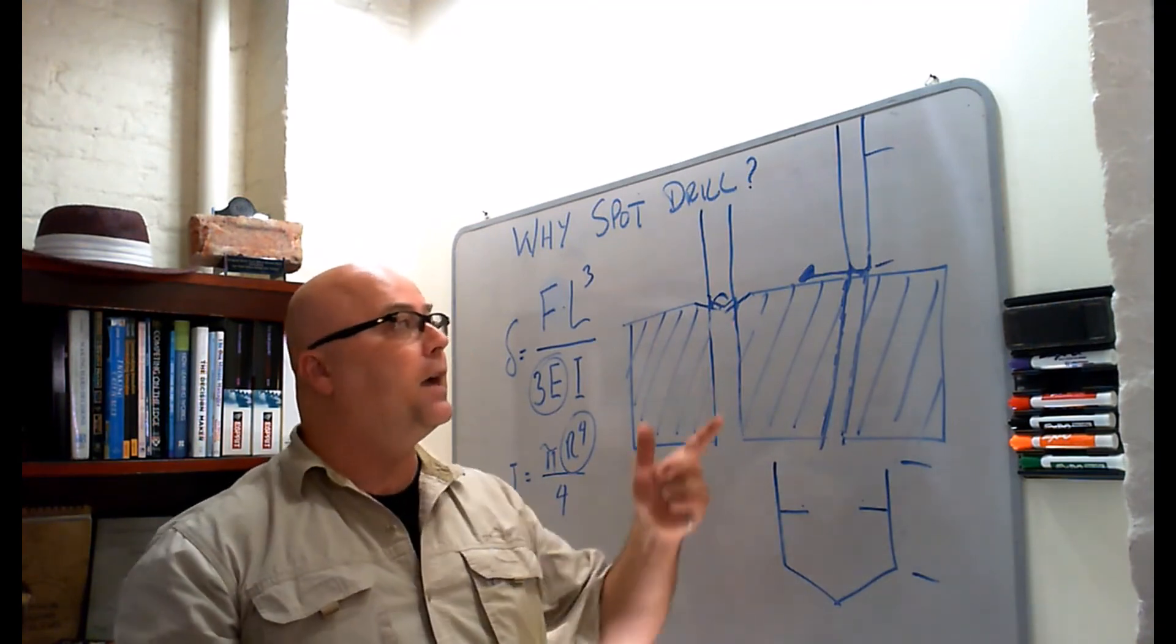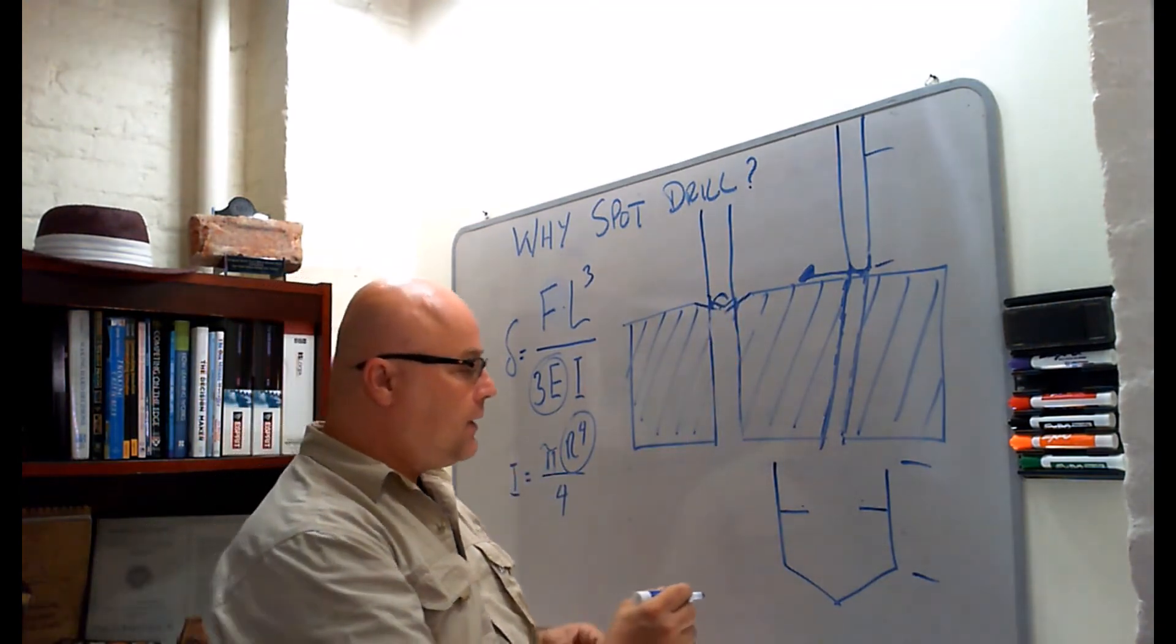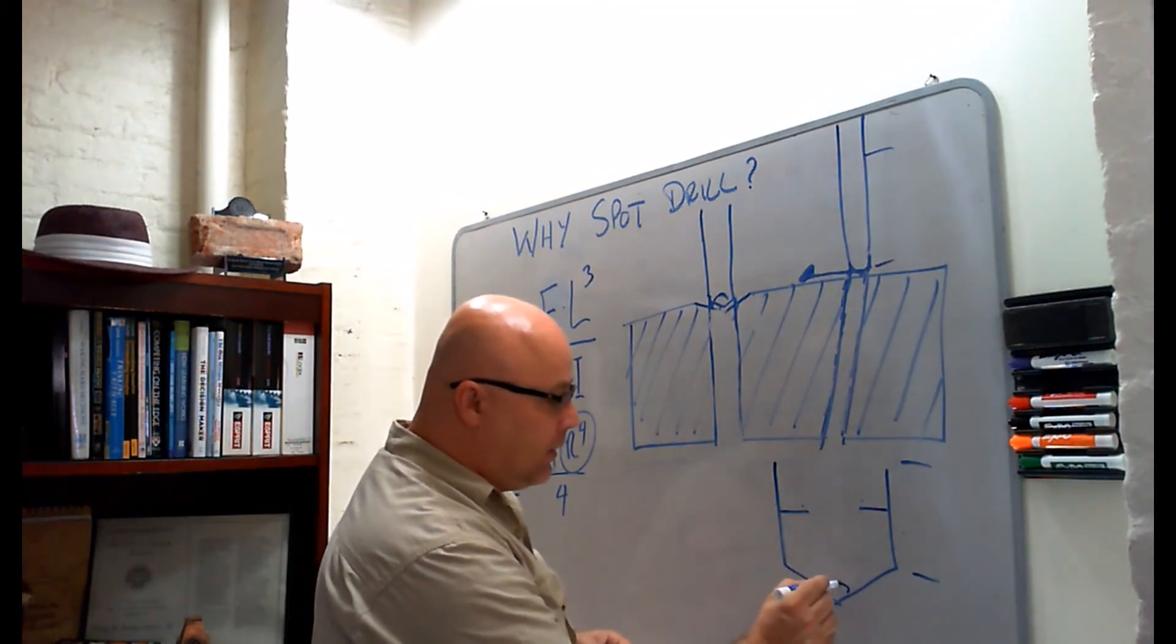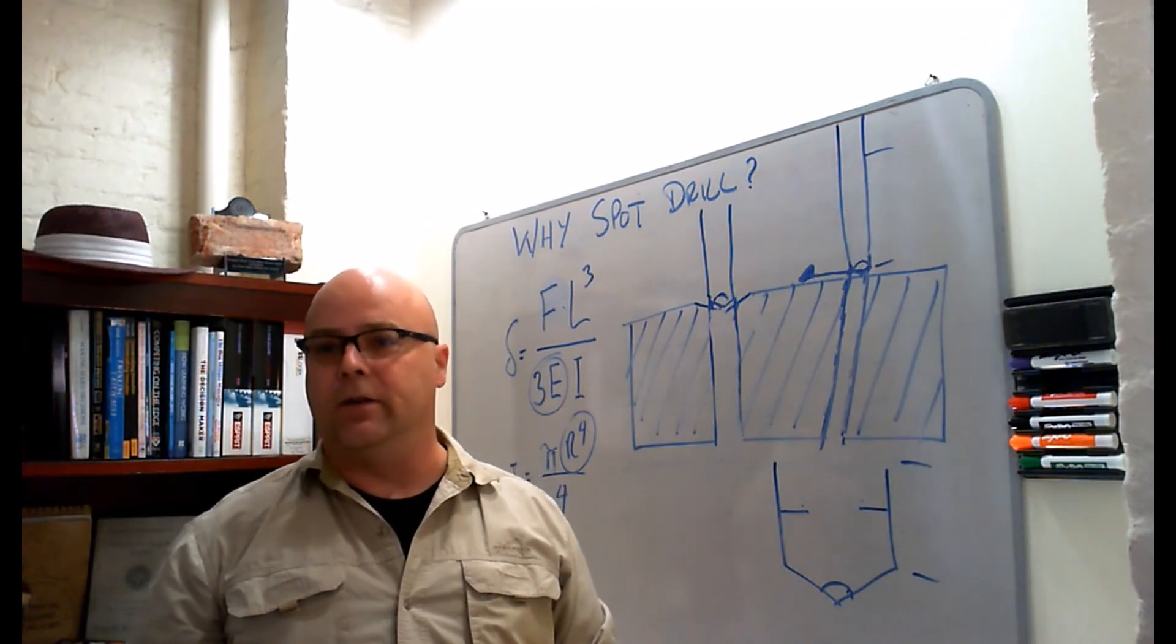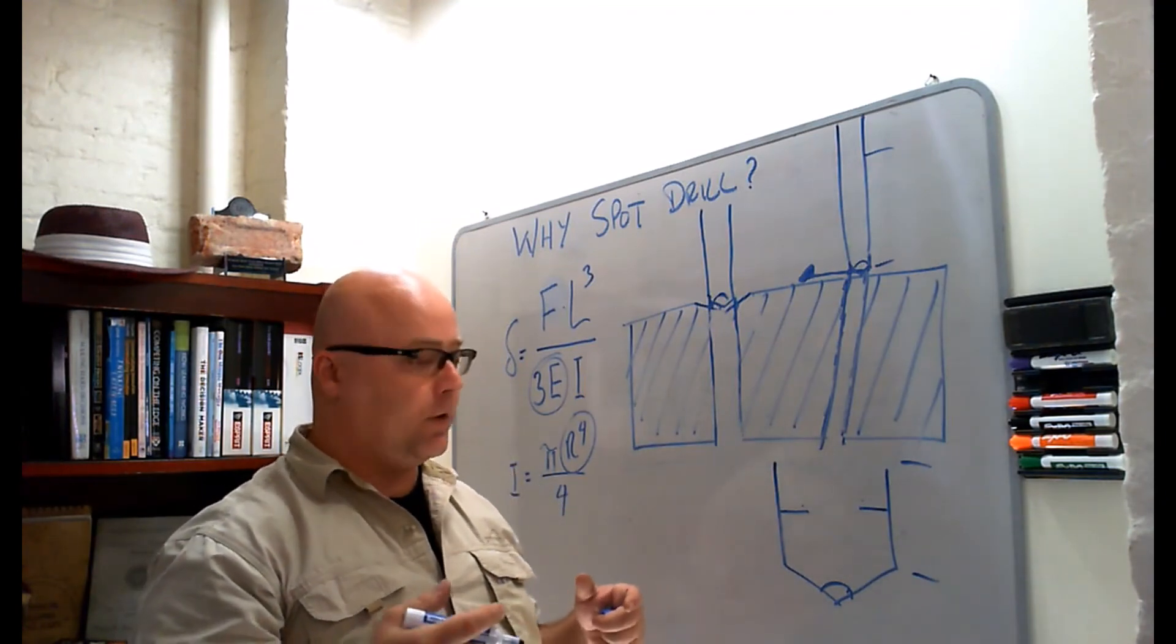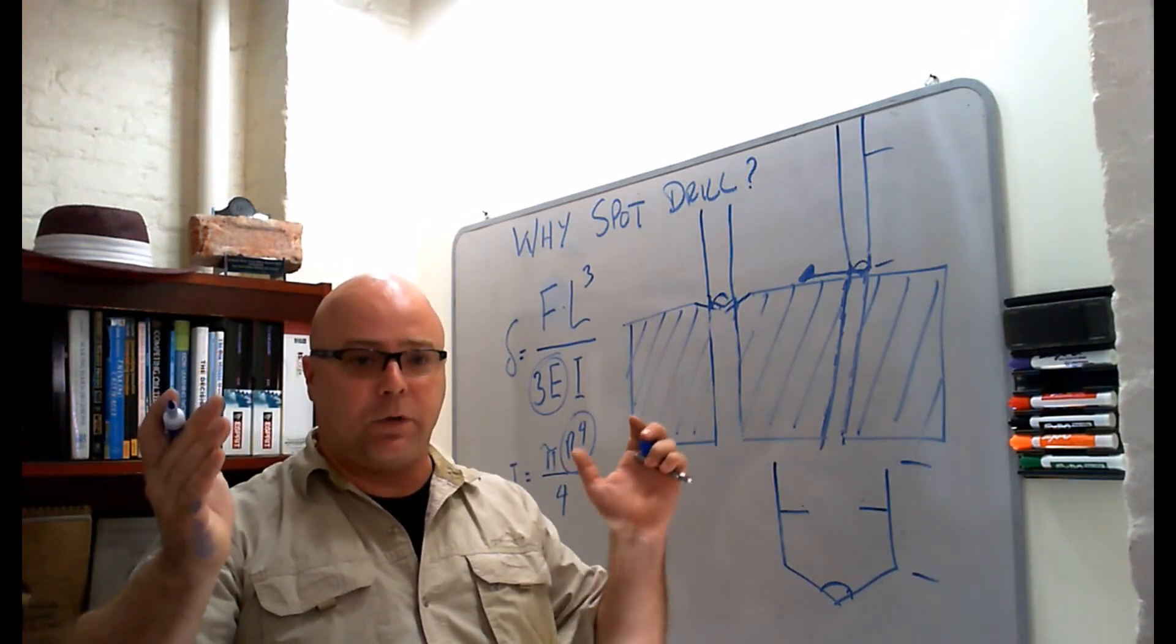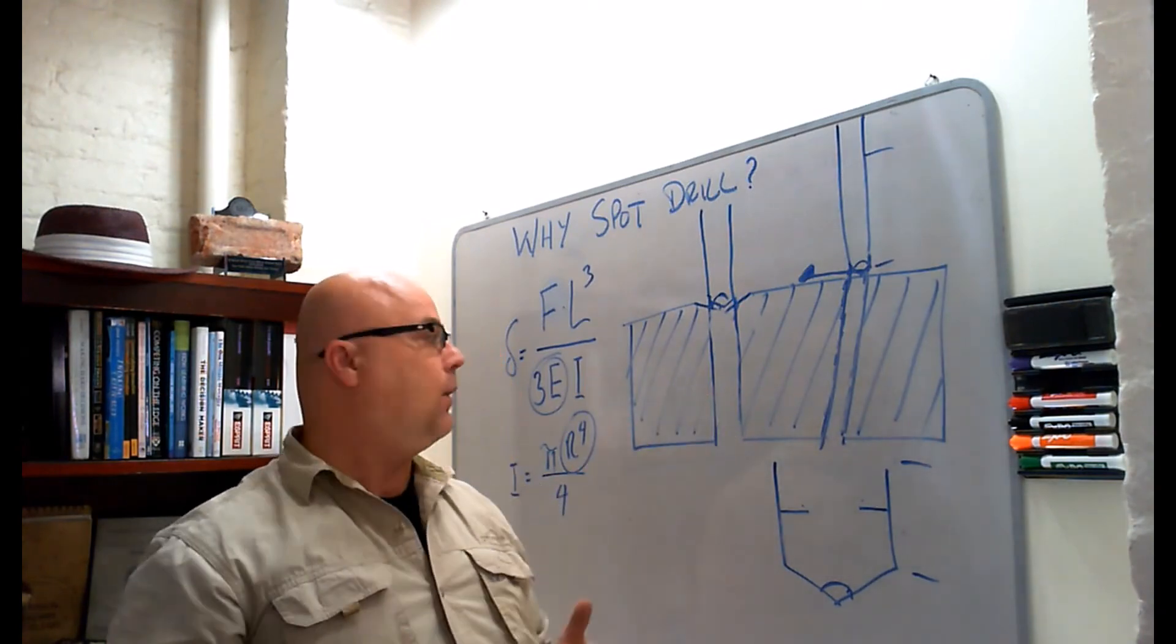When you're using a high-speed steel drill like our example here, you actually want that angle here on your spot drill to be larger than the angle here on your high-speed steel drill so that you come into contact on the edge, which pushes it out against the other edge, and it guides it down into that hole.